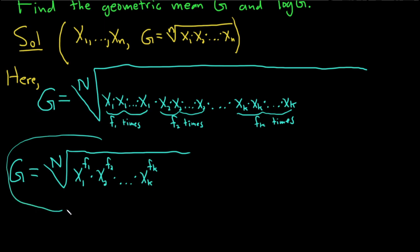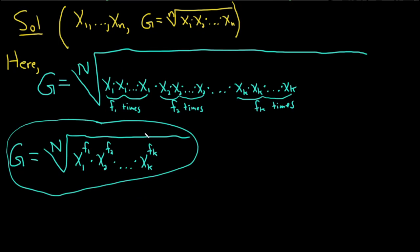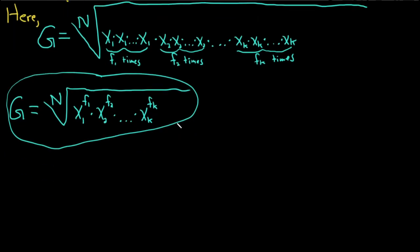The question also wants us to find an expression for the log, so let's go ahead and do that. We can take the log of both sides, but before we do, realize that this can be expressed as follows: this is really x1 to the f1 times x2 to the f2 times dot dot dot times xk to the fk, and this is to the 1 over capital N, because this is 1 over N. So we can write it that way.